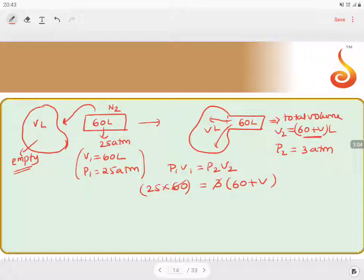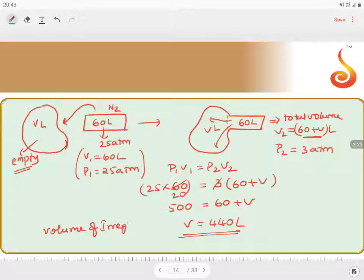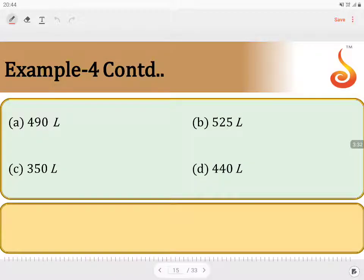So now 3 can be cancelled, 20 times 25, that is 500 equals 60 plus V. Now V equals 440 liters. So what is the volume of irregular shaped tank is 440 liters. So the answer should be option D, it should be 440 liters.